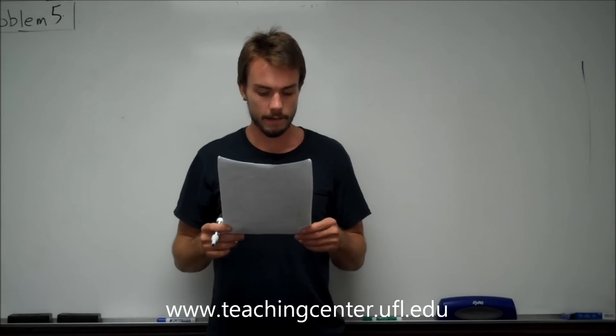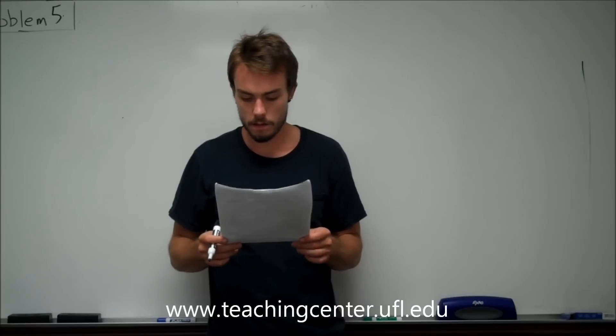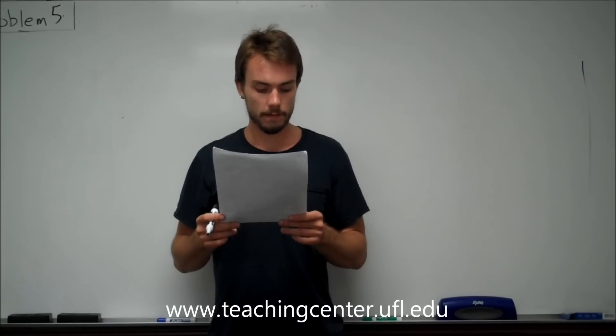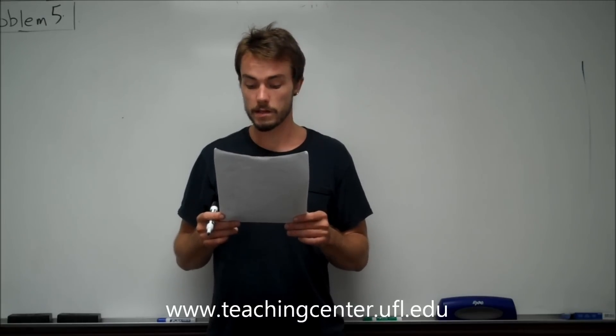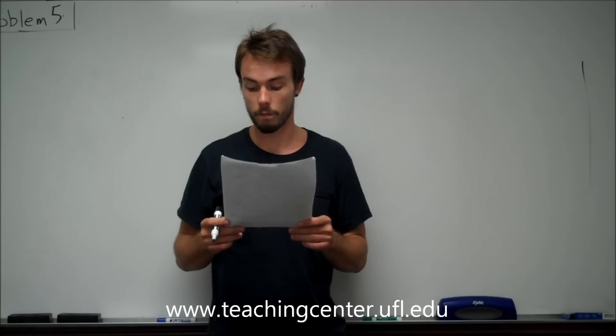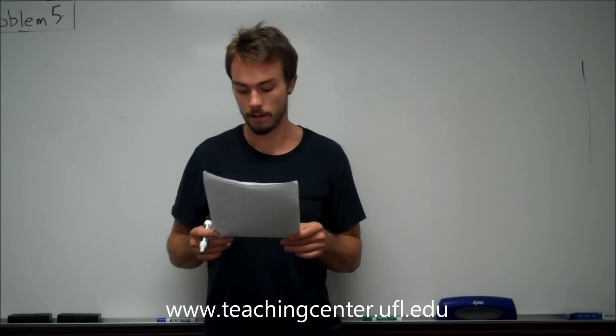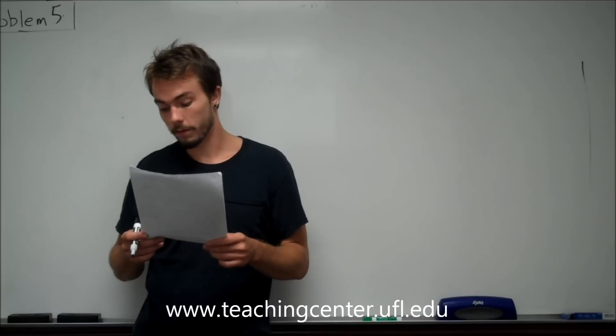Problem 5 states: a high tower is built on planet Zub, which has no atmosphere and has an acceleration due to gravity of 8 meters per second squared. A man standing at the top of the tower leans over the edge and simultaneously throws two balls, one up and one down, each with an initial speed of 5 meters per second. What is the distance between the balls three seconds later?